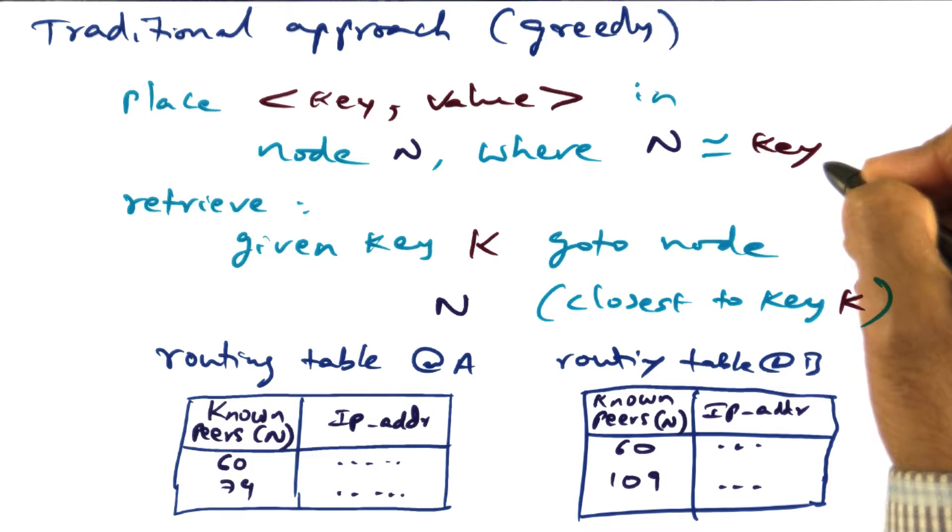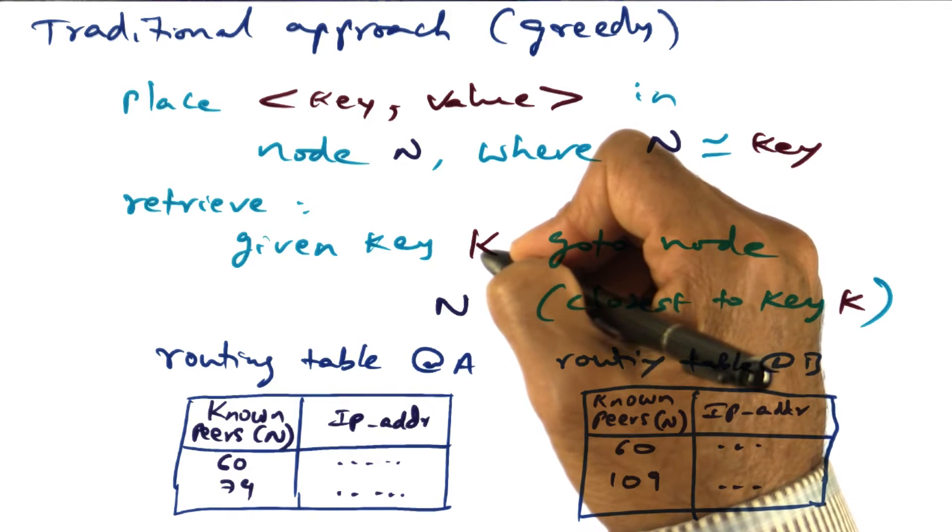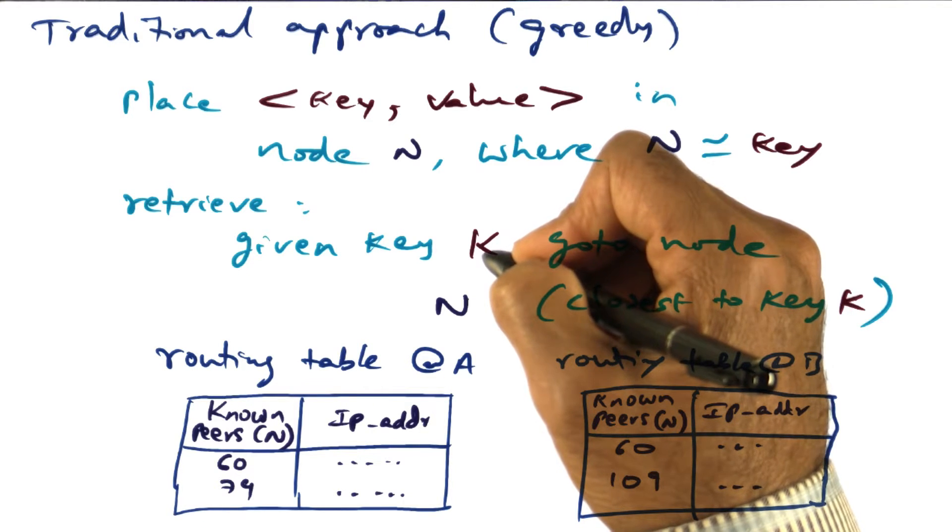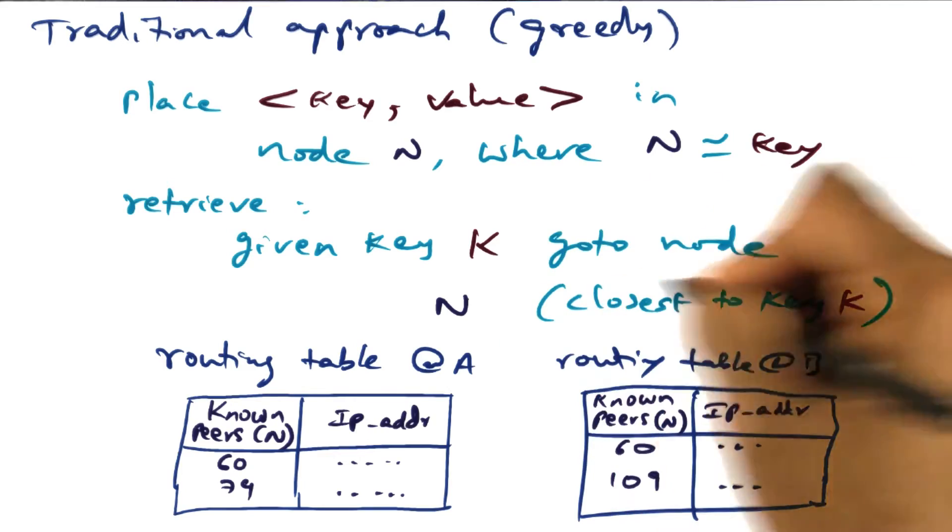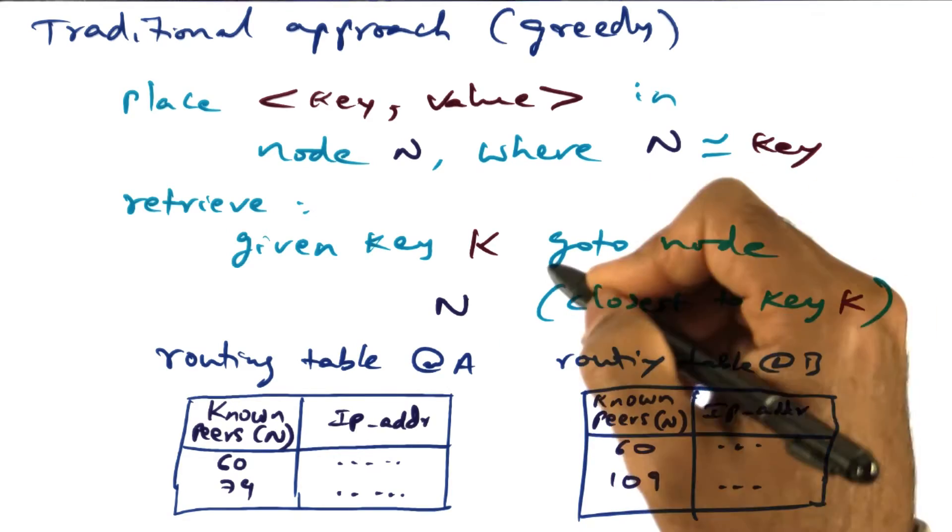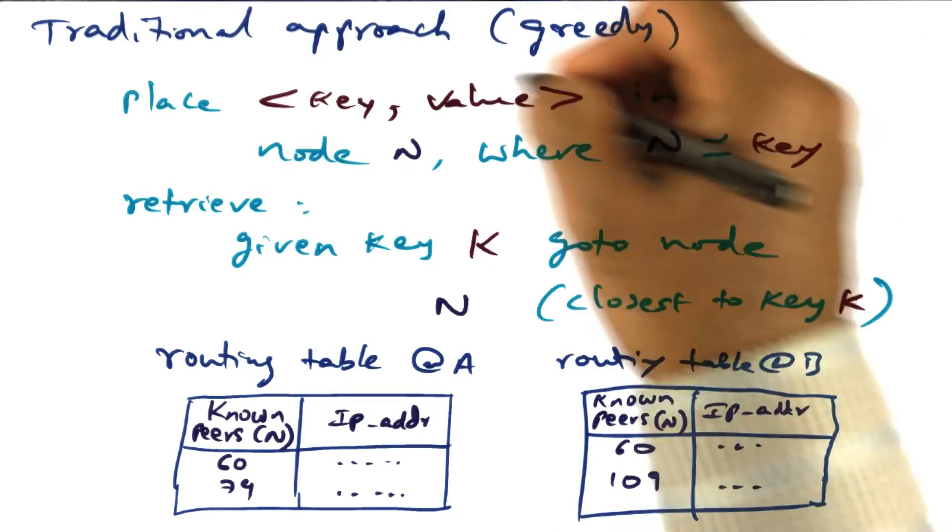And now, if you want to retrieve a given key k, the algorithm is going to be, you want to go to a node n which is closest to this key k, because that is the algorithm that is being used for placing.